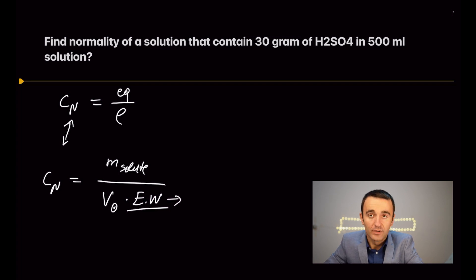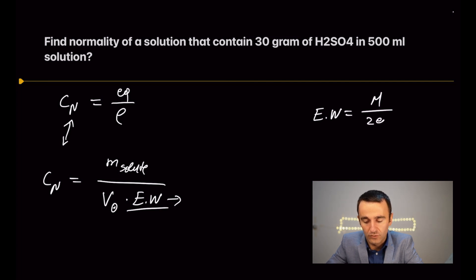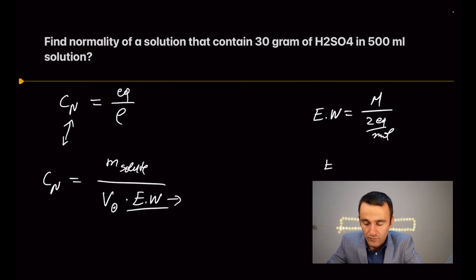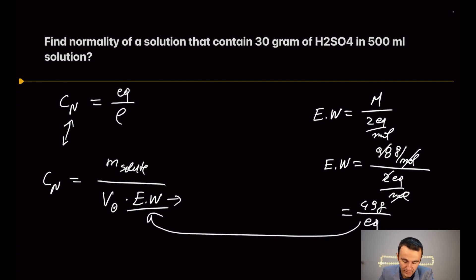Equivalent weight is the molar mass divided by the number of equivalents the compound contains. For sulfuric acid, the equivalent weight is the molar mass divided by two equivalents per mole. That is 98 divided by 2, which equals 49 grams per equivalent.